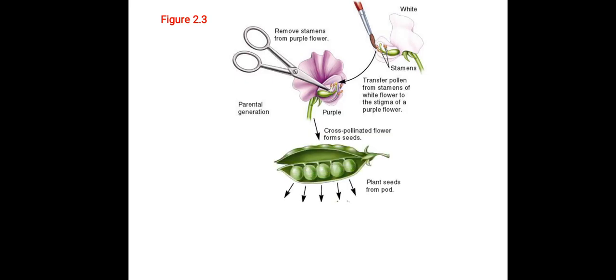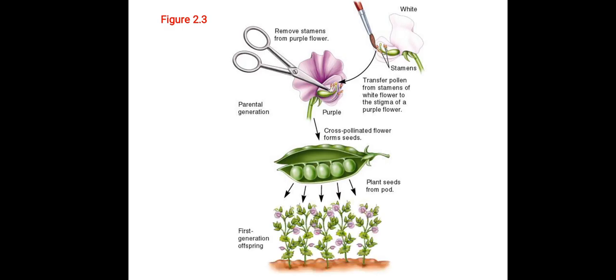Here is the parental plant 1, which is a purple flower. Mendel removed the stamens of the purple flower. Then he transferred the pollen from stamens of the white flower to the stigma of the purple flower. Then he cross-pollinated the flower, which forms the seeds. And these plant seeds were further grown to form the F1, or the first generation of offspring.